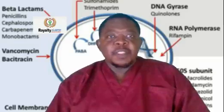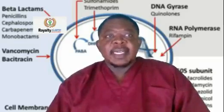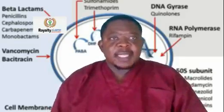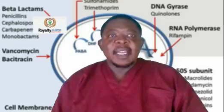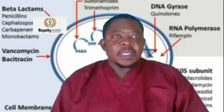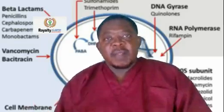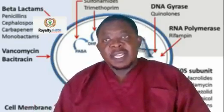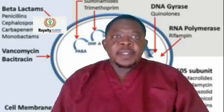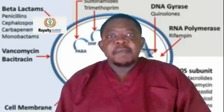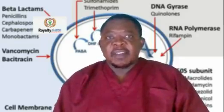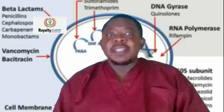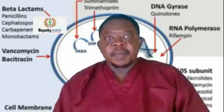The next group of antibiotics we are going to look at are aminoglycosides. Aminoglycosides are bacteriostatic in nature, meaning they slow down the growth and reproduction of bacteria without necessarily killing the bacteria. These antibiotics inhibit the synthesis of proteins by binding to the 30S bacterial ribosome subunits.